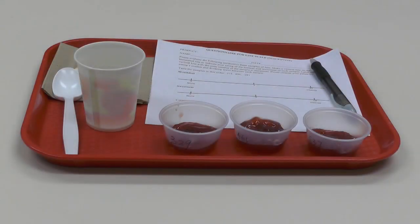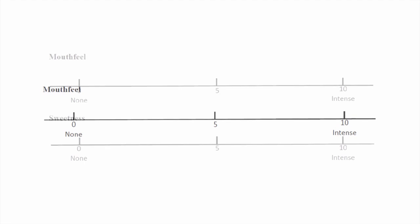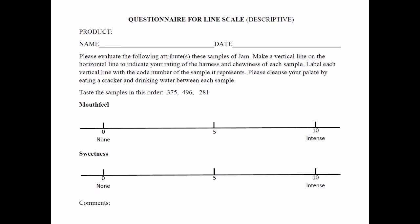Line scales are also known as unstructured scales. They are typically a horizontal 15 centimeter long line with anchor points 1.5 centimeters from each end, and also come with an optional middle anchor point. A separate line scale is required for each attribute being tested. The anchor points are often accompanied by numbers and or descriptive words. Panelists can indicate their score by marking a vertical line anywhere along the line scale, and the markings can then be measured and translated into numbers for statistical analysis.